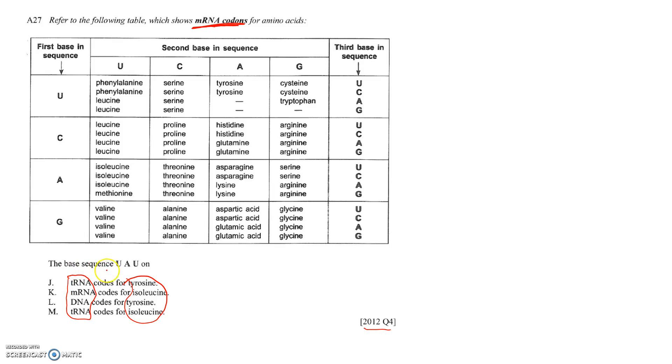The base sequence we're talking about is U, A, U. The presence of U there lets us know it's not DNA. So it's either tRNA or mRNA. Let's go with option one.